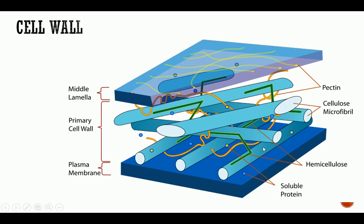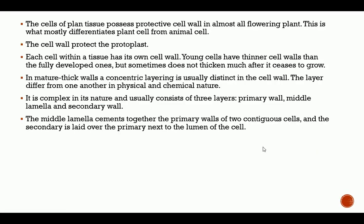The cells of plant tissues possess a protective cell wall in almost all flowering plants. This is what mostly differentiates plant cells from animal cells — animal cells do not have a cell wall. The cell wall protects the protoplast, and each cell within a tissue has its own cell wall.